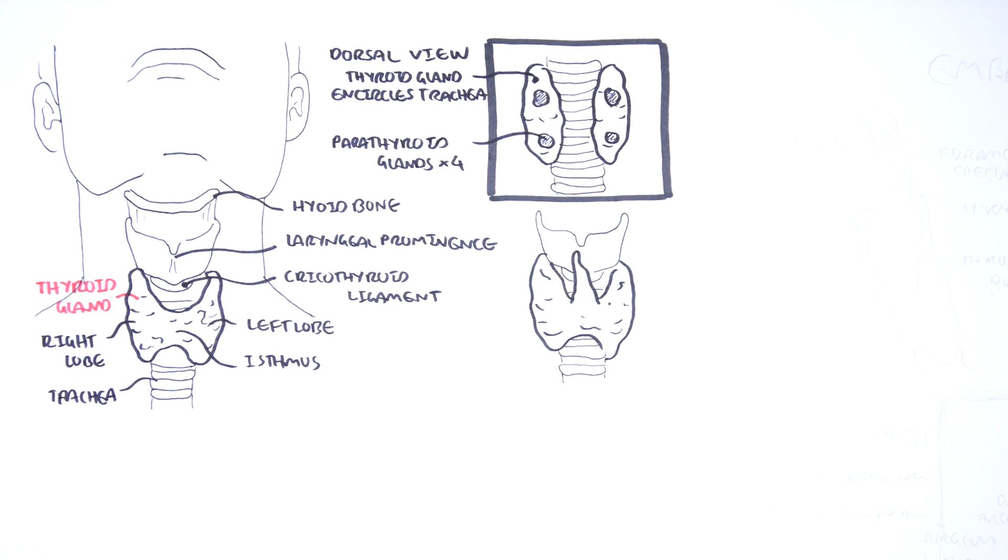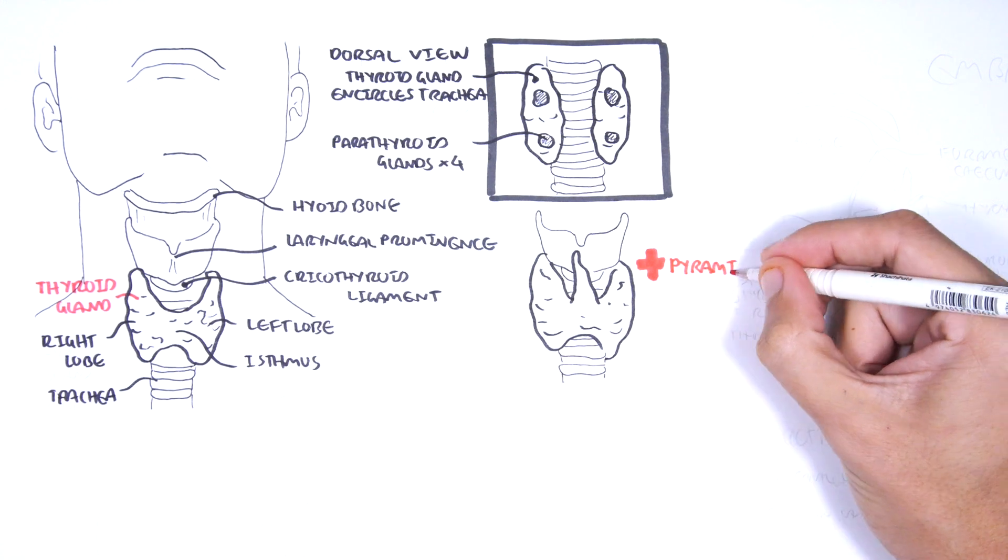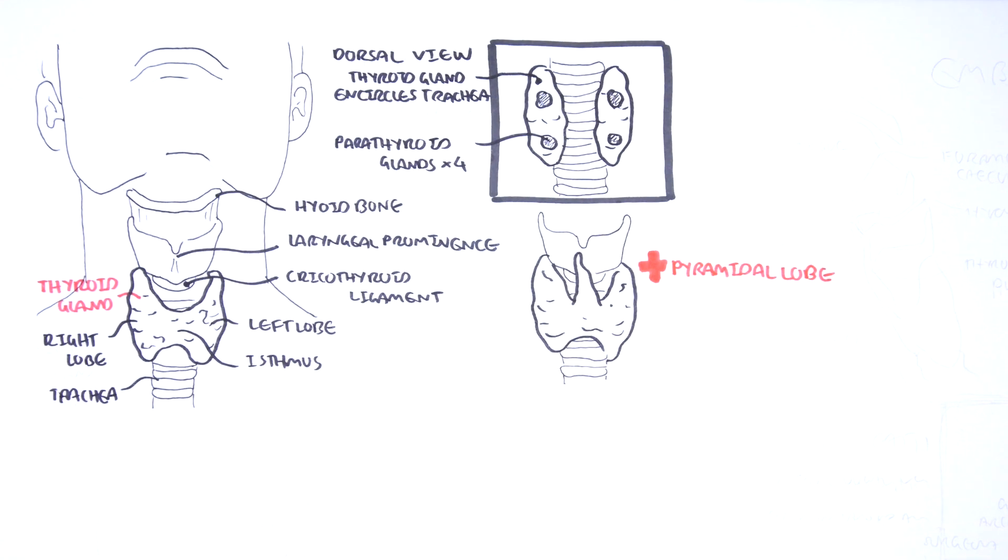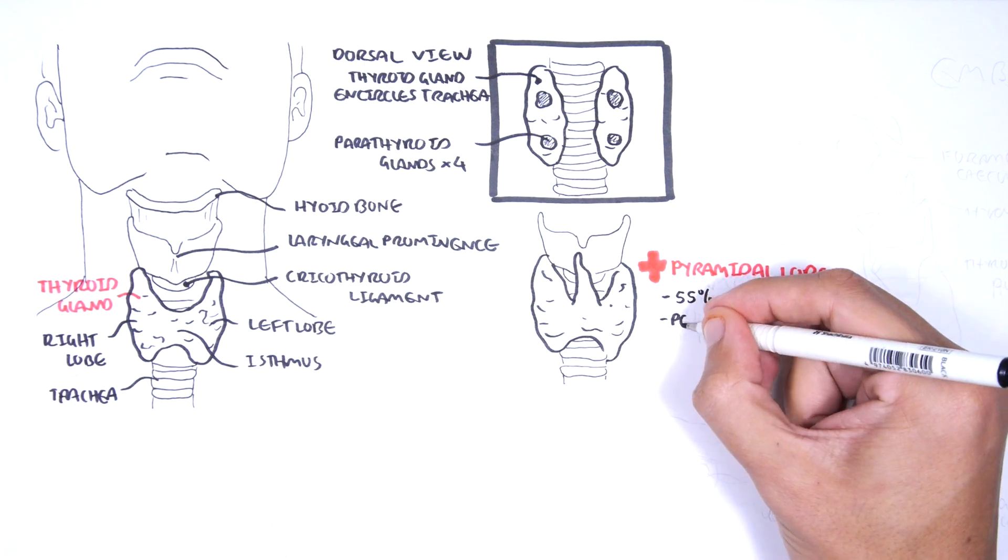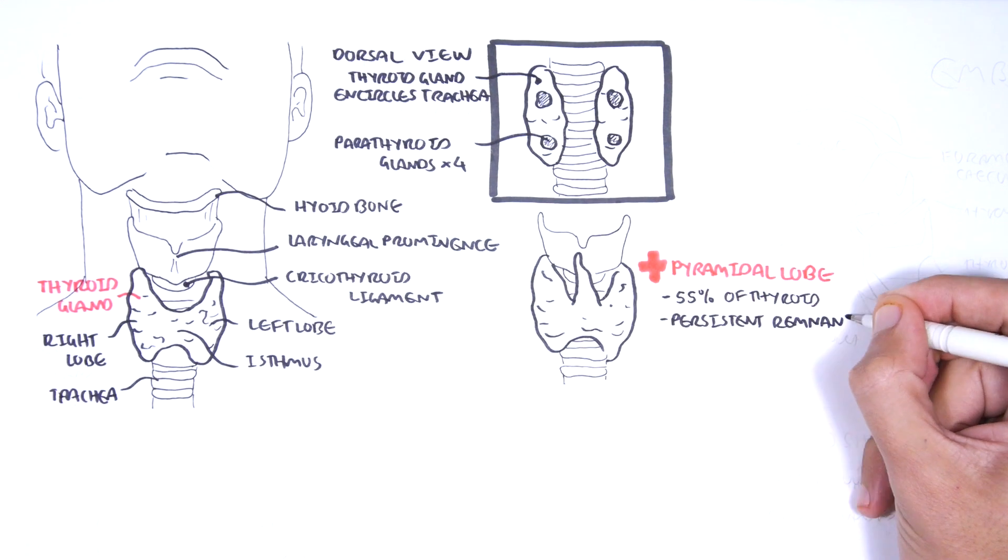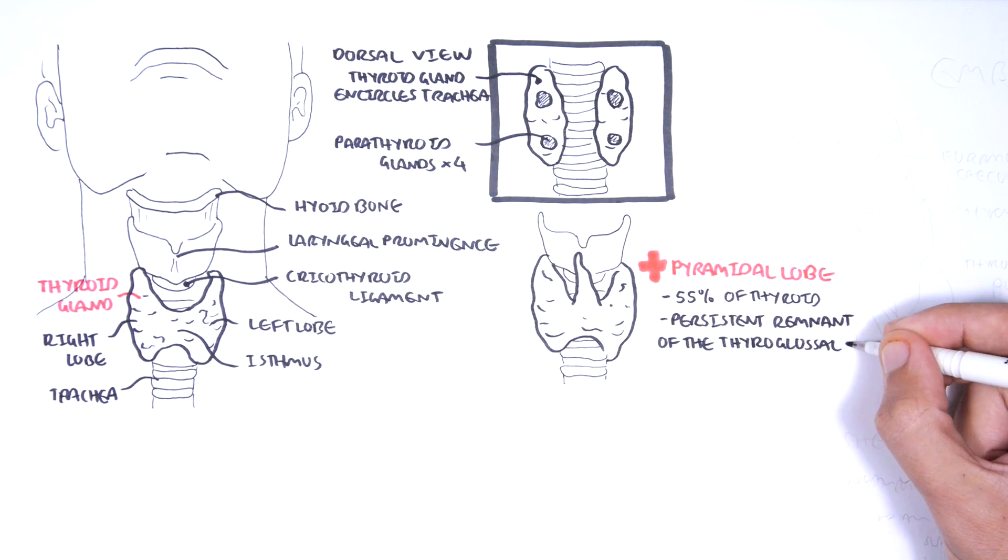Developmentally, the thyroid isthmus can give rise to a structure called the pyramidal lobe, which extends upwards. The pyramidal lobe is common in up to 55% of people and is a result of the persistent remnant of the thyroglossal duct.